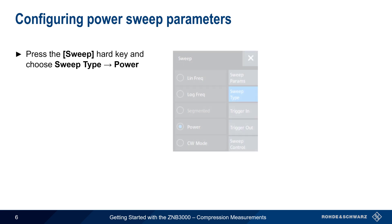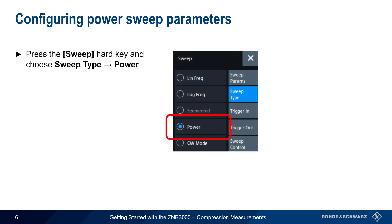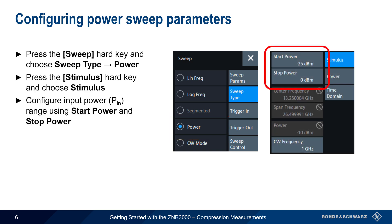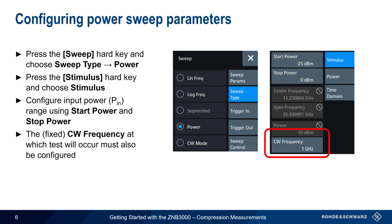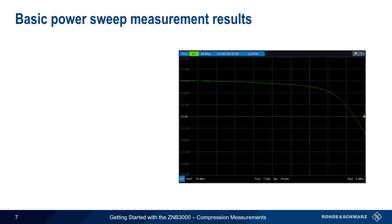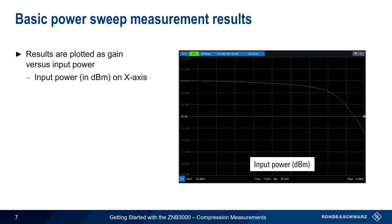Basic configuration begins by pressing the Sweep hard key and then choosing Sweep Type: Power. Then press the Stimulus hard key to configure the start and stop powers in dBm — this is the input power range to the device under test. The other important parameter is CW frequency, which is the fixed frequency at which the power sweep is performed. The ZMB3000 runs the measurement automatically, displaying results as a graph of gain versus input power: the x-axis shows input power in dBm and the y-axis shows gain in dB.